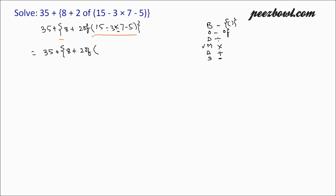So we are going to perform 3 multiplied by 7 first. So we have 15 minus 3 multiplied by 7, which is 21, minus 5, then closing both the brackets.